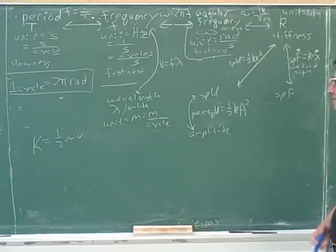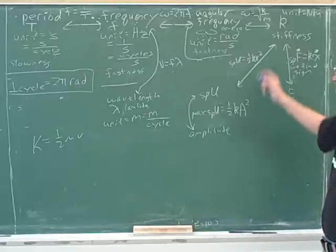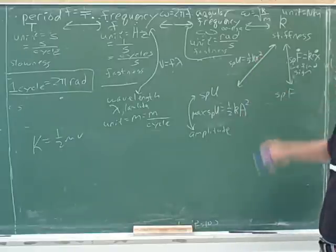The maximum spring energy is one-half times K times the amplitude squared, because A is the biggest displacement could be over here.